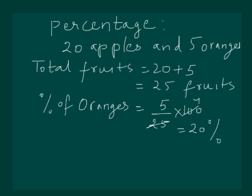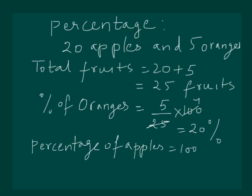The percentage of oranges comes out to be 20%. Therefore, the percentage of apples would be 100 minus 20, which is equal to 80%. Hence we can compare that in the basket 20% are oranges and 80% of the fruit are apples.